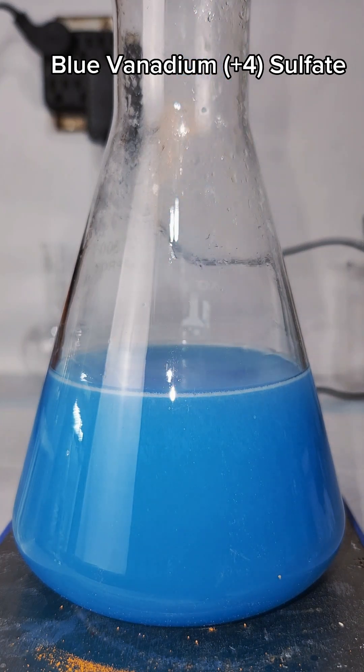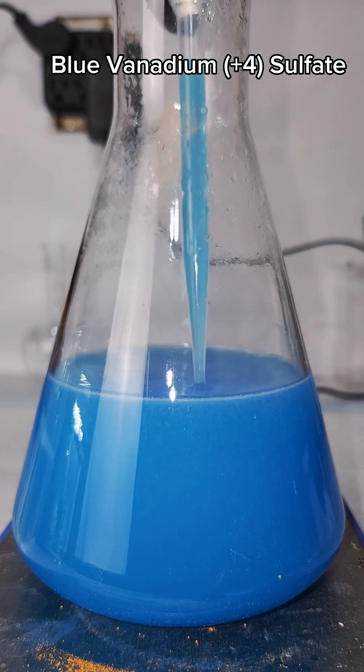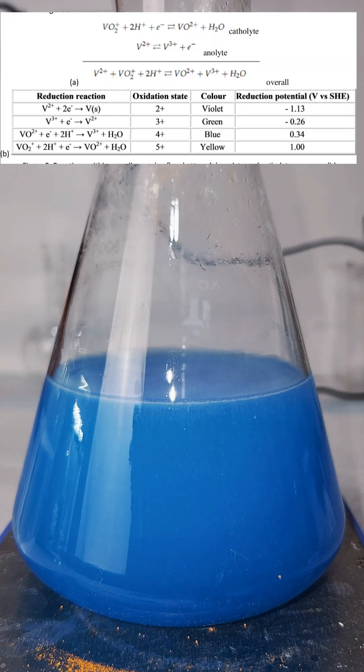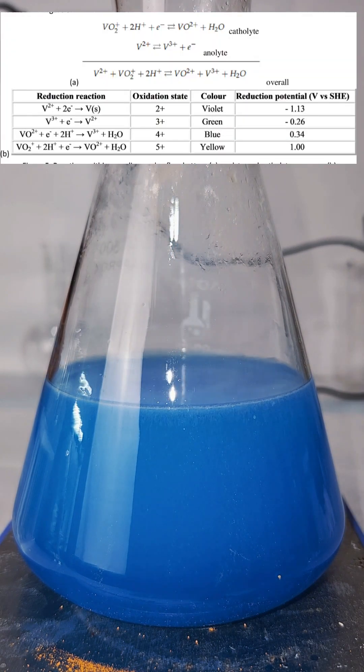Not only this, but zinc can continue to reduce vanadium ions to the plus three state, and then the plus two state, which are green and violet respectively.